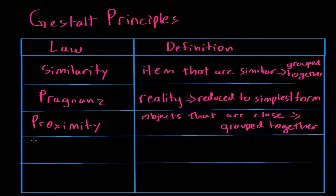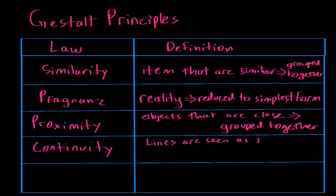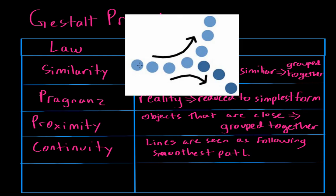The next law is the law of continuity. The law of continuity basically says that lines are seen as following the smoothest path. In this example we see again a bunch of circles. When you look at these you notice there's a continuous flow in one set of circles rather than flowing another way, because the angle here is much less steep than the other angle. Your brain naturally draws a line and notices that these circles are continuous whereas the others are a little bit discontinuous.